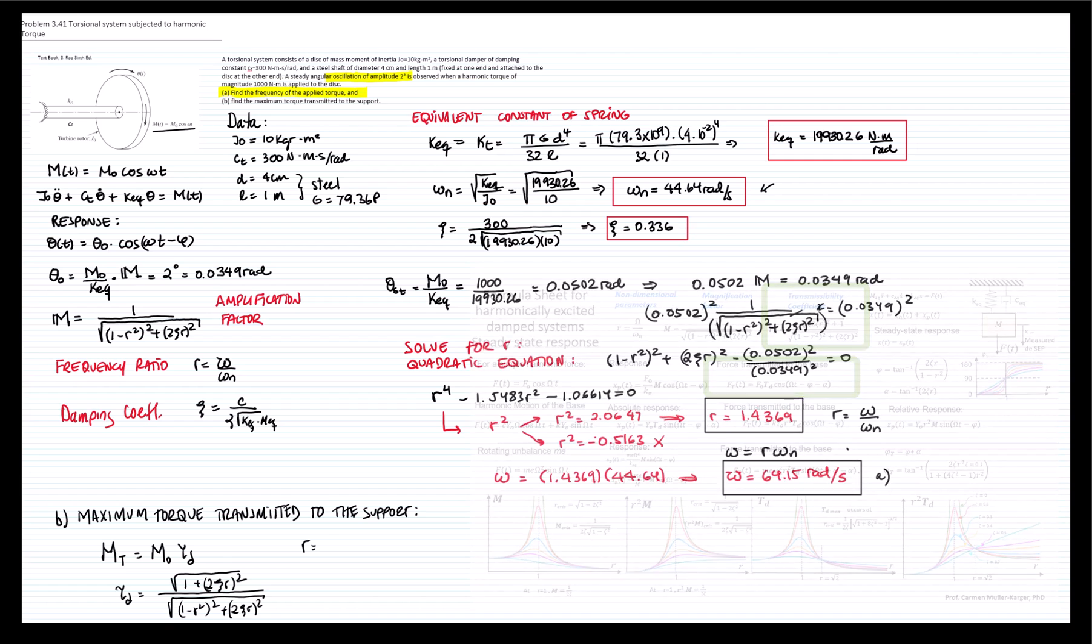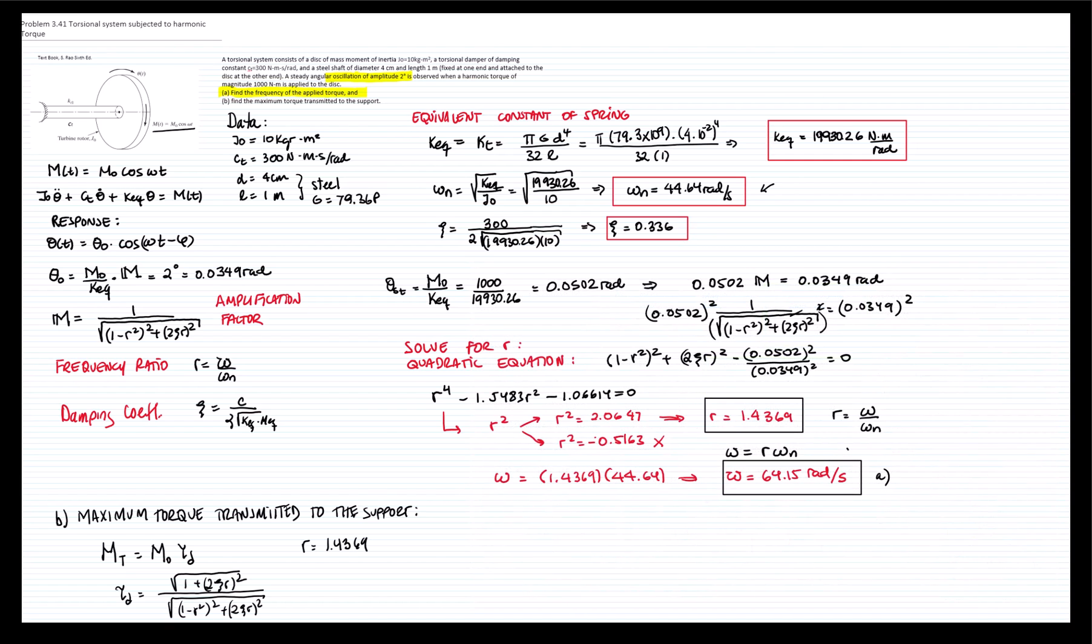We already know r and we already know zeta. With those two factors, we get the transmissibility factor because we just plug in the numbers and that gives me a value of 0.96709. And we know that the moment is equals to 1,000 newton meters. Therefore, we get that the moment transmitted to the foundation is 967 newton meters. And this represents part B of the problem, which is this one right here.